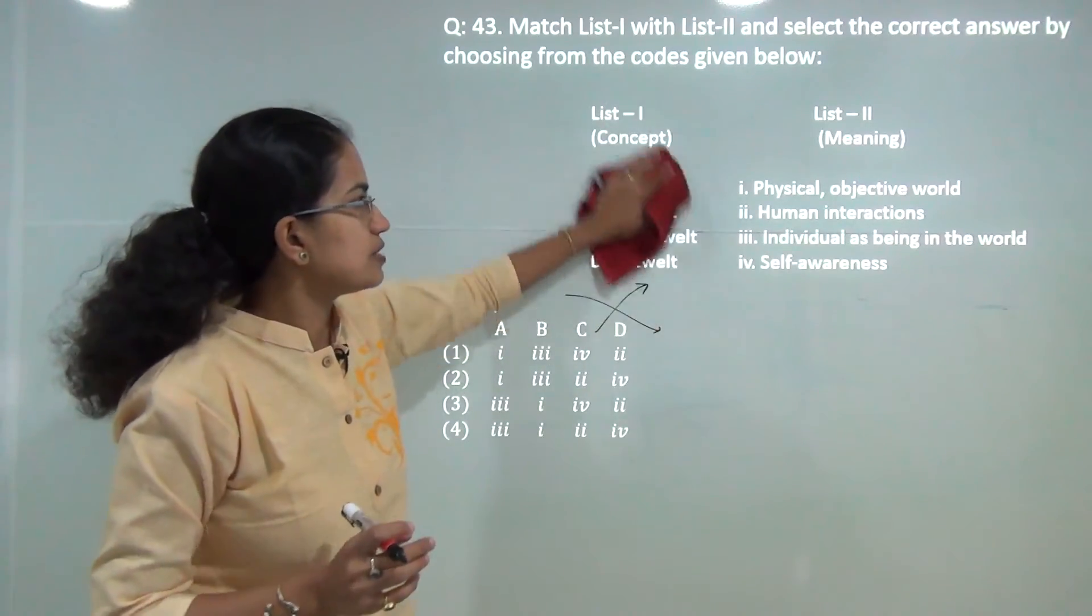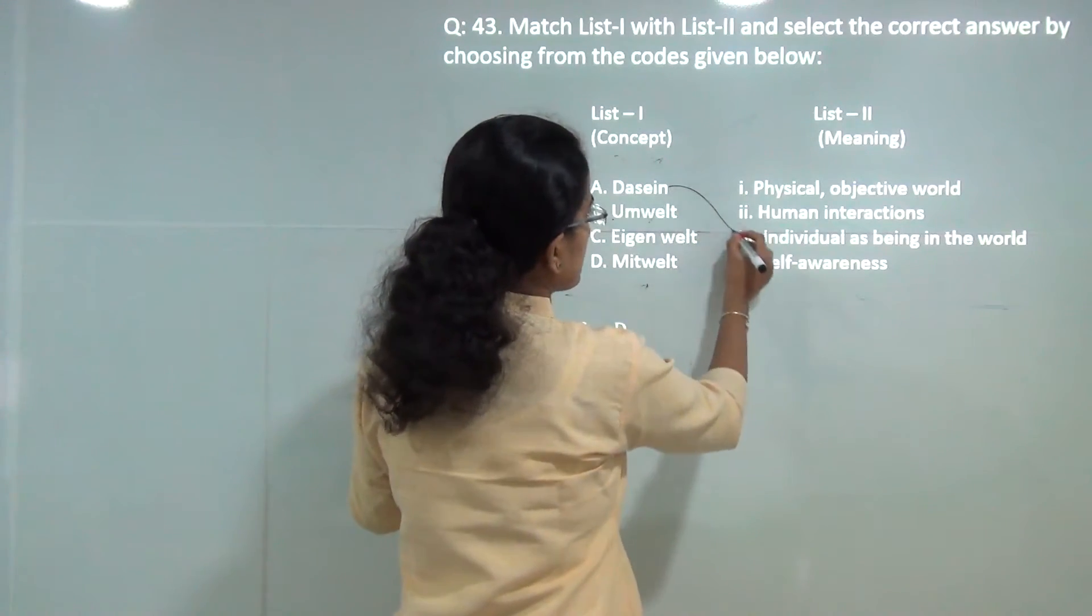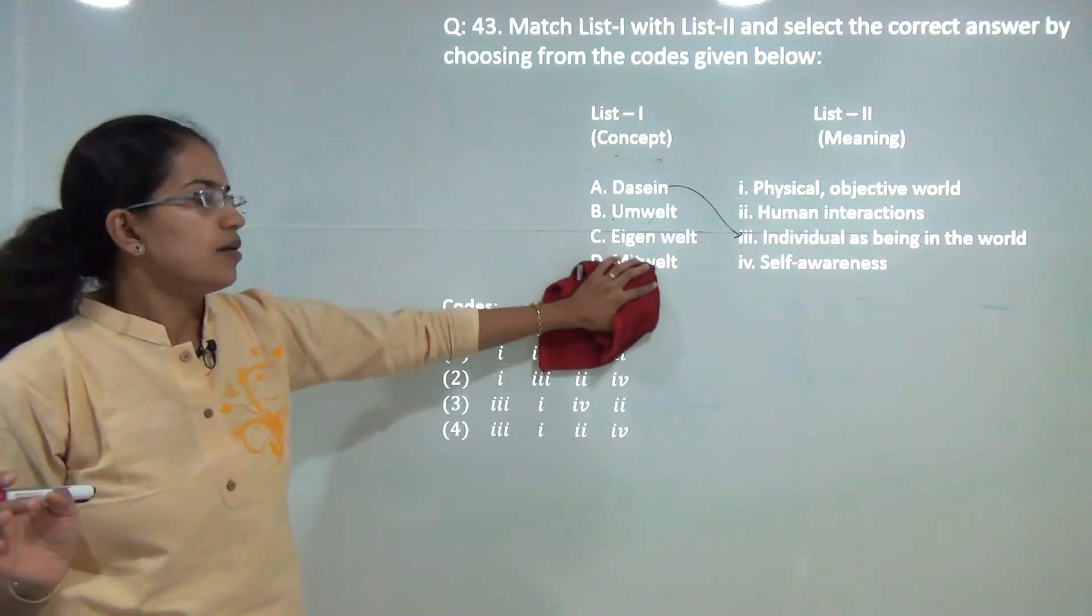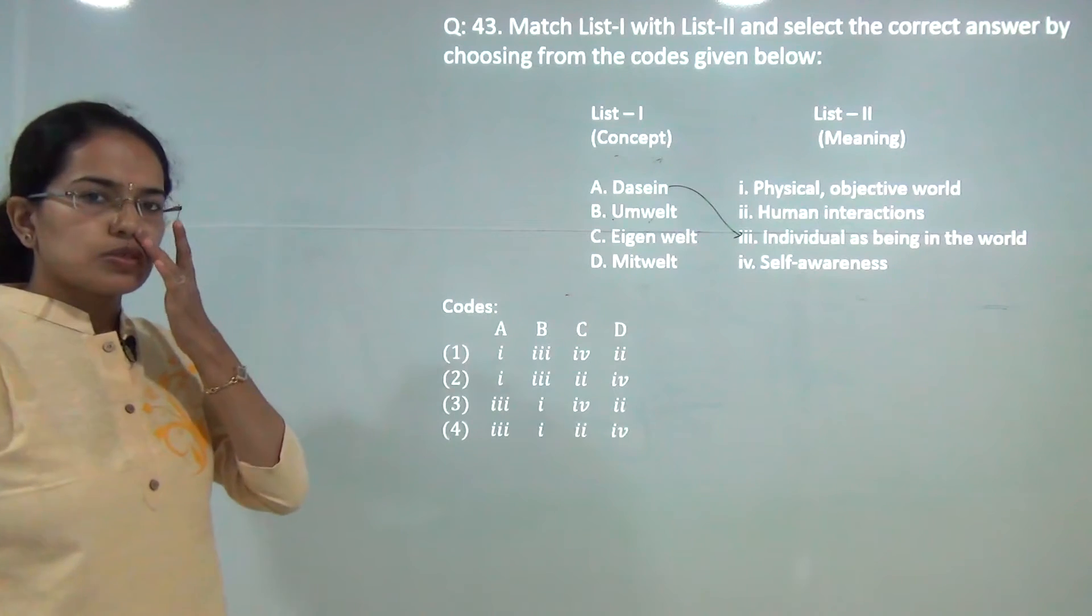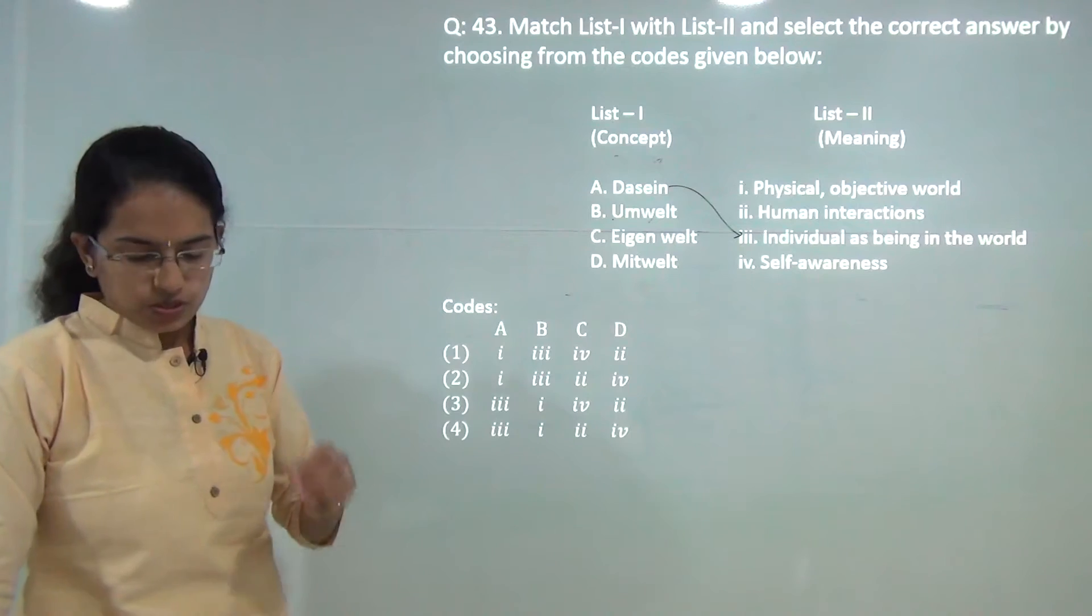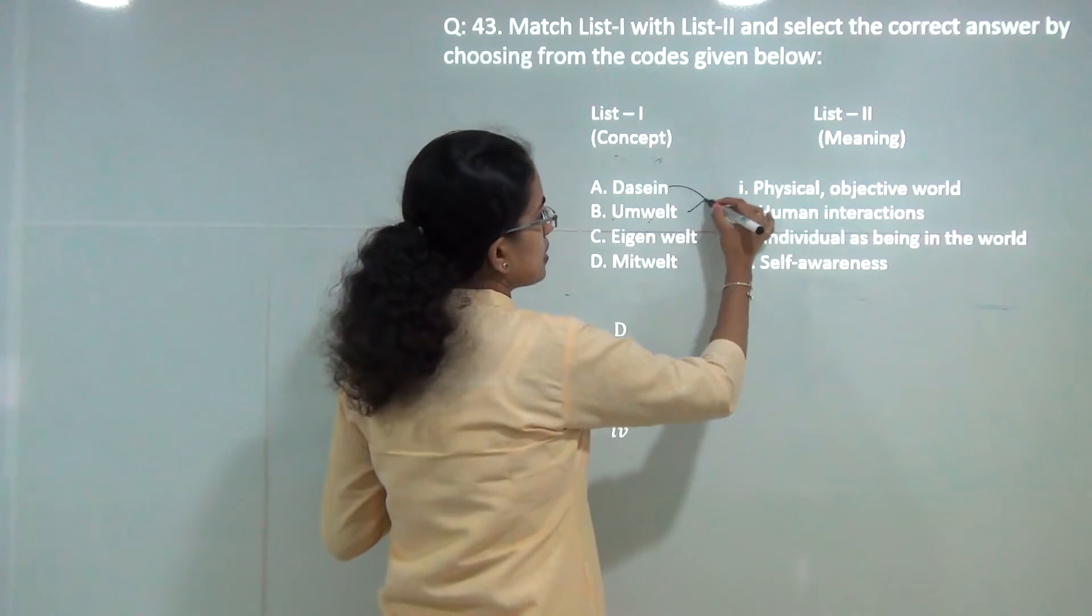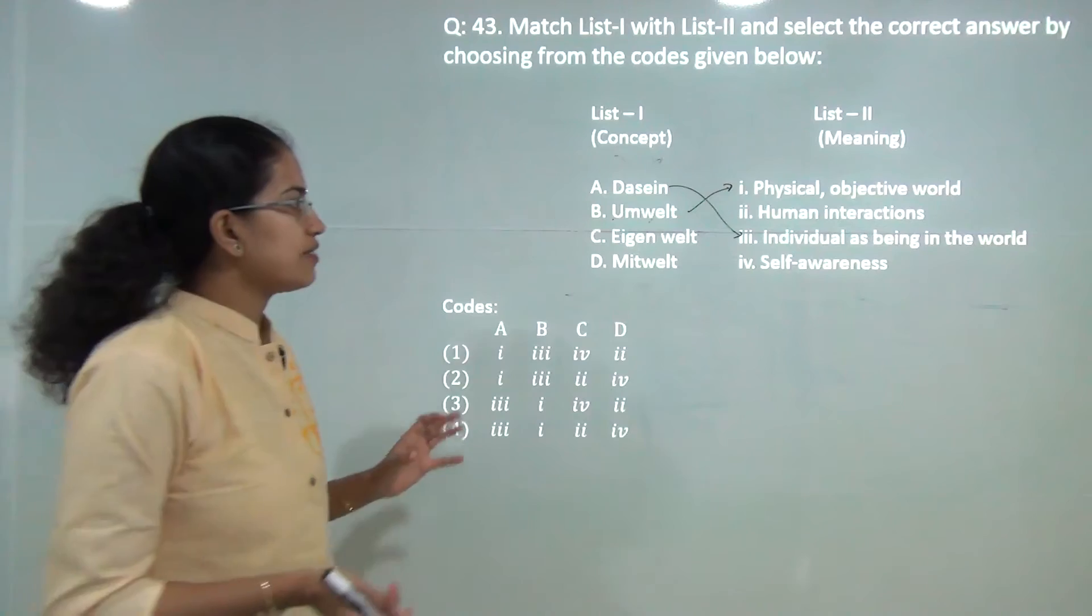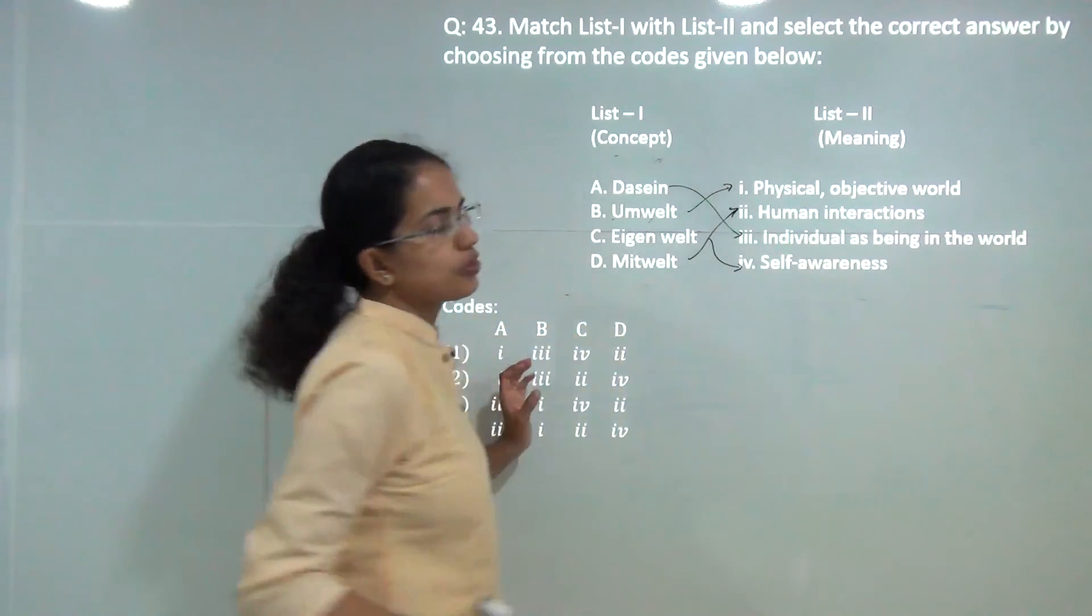Next, you have to match the concept with the correct meaning. Dasein means individual as being in the world. So Dasein, the worldly meaning for the word itself is being in the world, being there. The presence itself is the key. Umwelt means the physical or the objective world that exists around you. Eigenwelt talks about self-awareness and Mitwelt talks about human interactions.